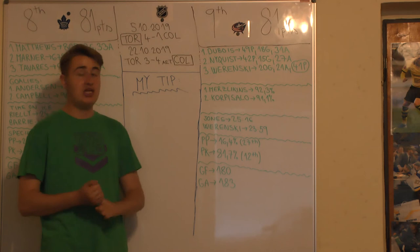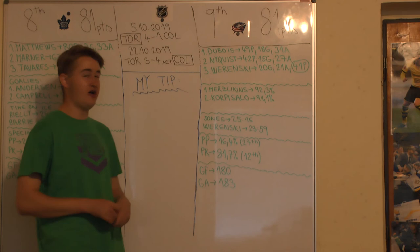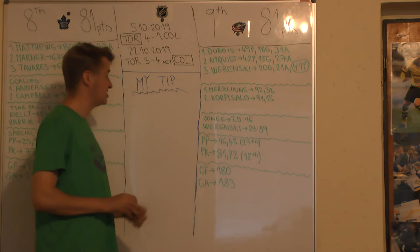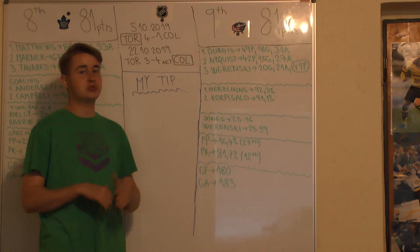Number one according to time on ice average is Seth Jones with 25 minutes and 16 seconds, over 25 minutes. That's really rare to see, but Seth Jones was playing a heck amount of minutes. And also Zach Werenski, his defensive partner, 23 minutes 59 seconds, so almost 24 minutes. So Seth Jones and Zach Werenski are definitely the most important guys on the blue line for Columbus and one of the most important players for Columbus overall.